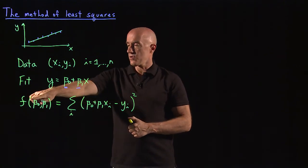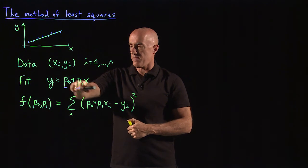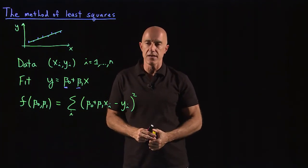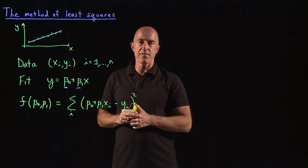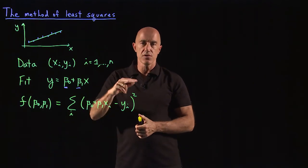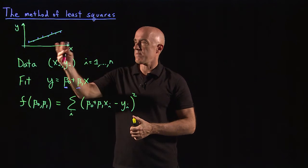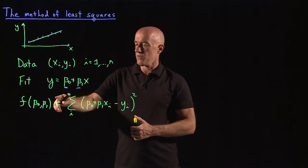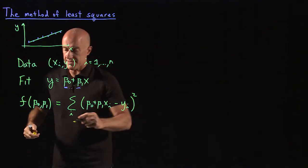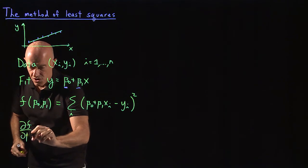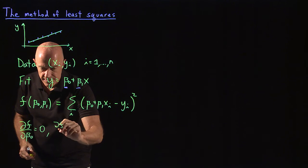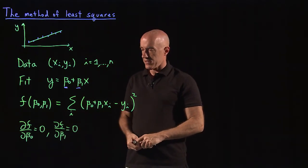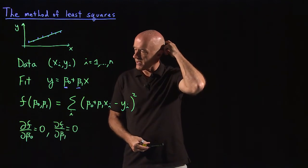This is our function of the two parameters beta_0 and beta_1, and we want to minimize F. Just like in single-variable calculus, we can set the partial derivatives of F with respect to each of the two variables equal to zero to find the minimum. We know there is a minimum because we can make the line as far away from the data as we like, so there's no maximum. We find the minimum by solving: partial of F with respect to beta_0 = 0, and partial of F with respect to beta_1 = 0.